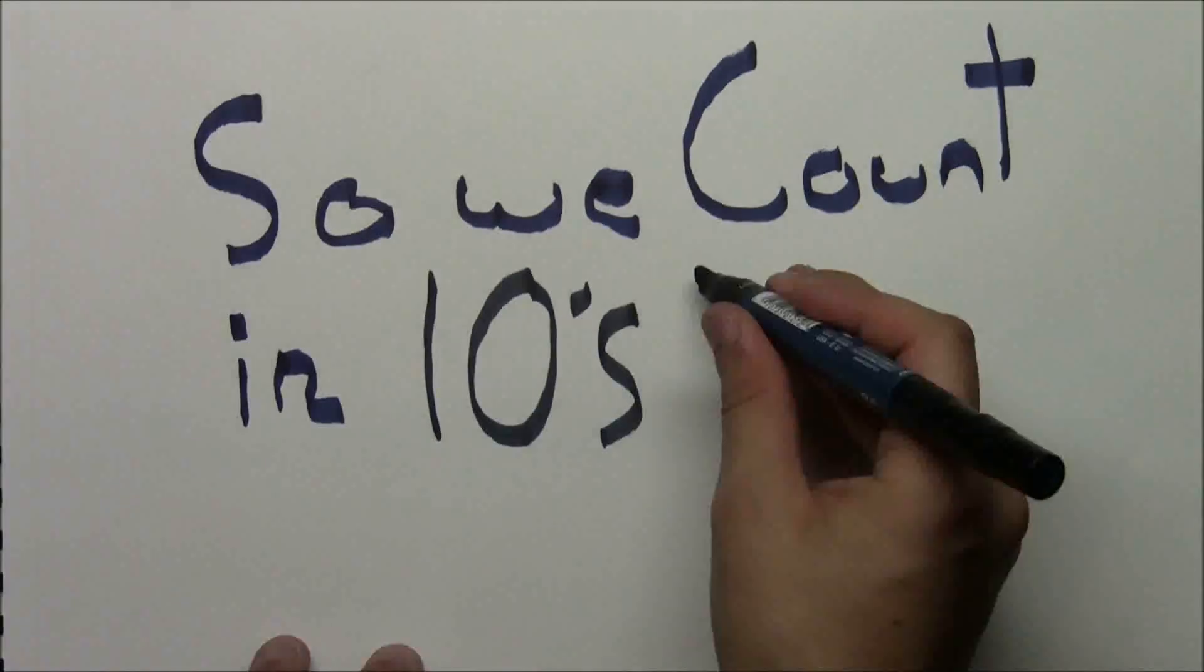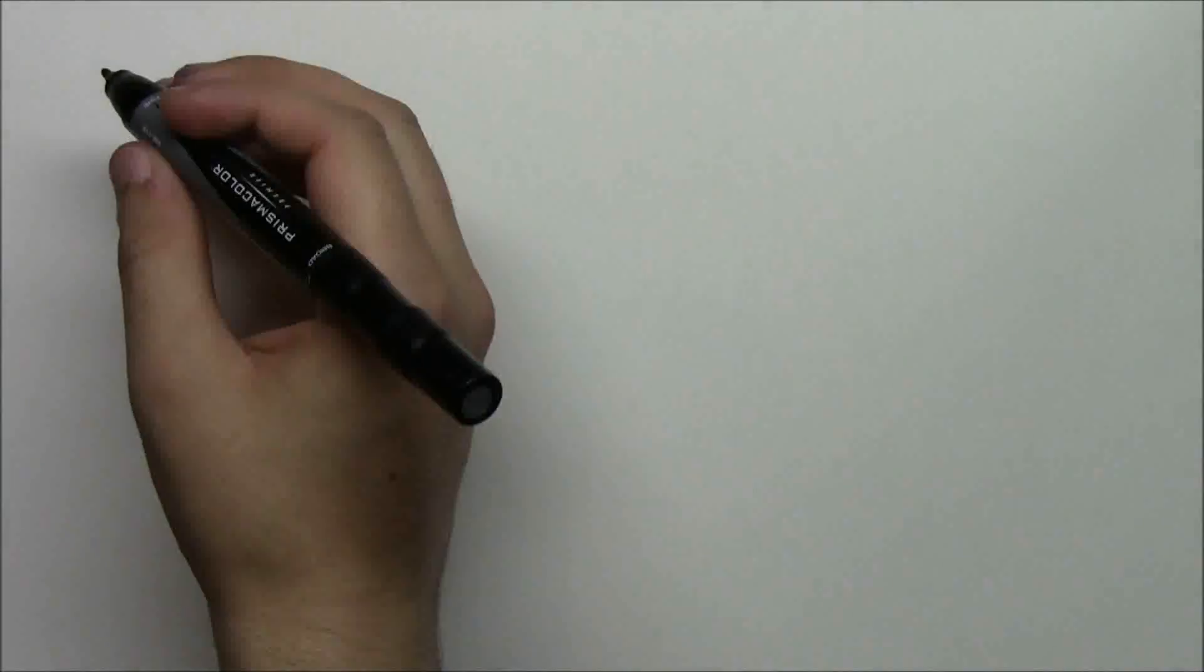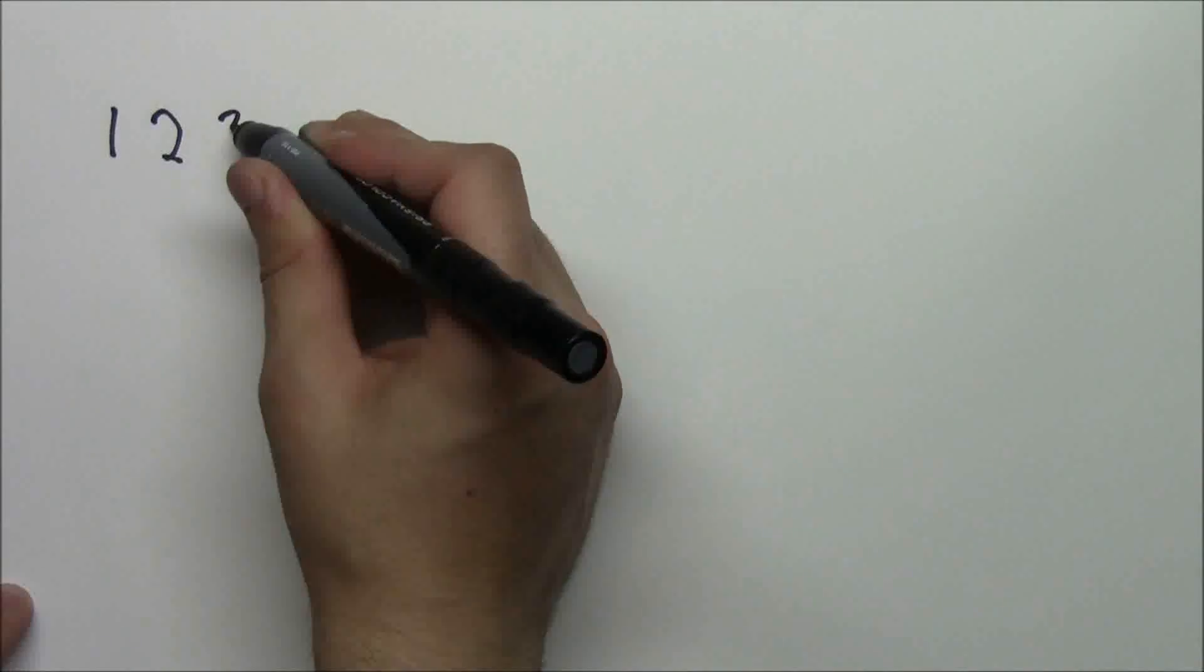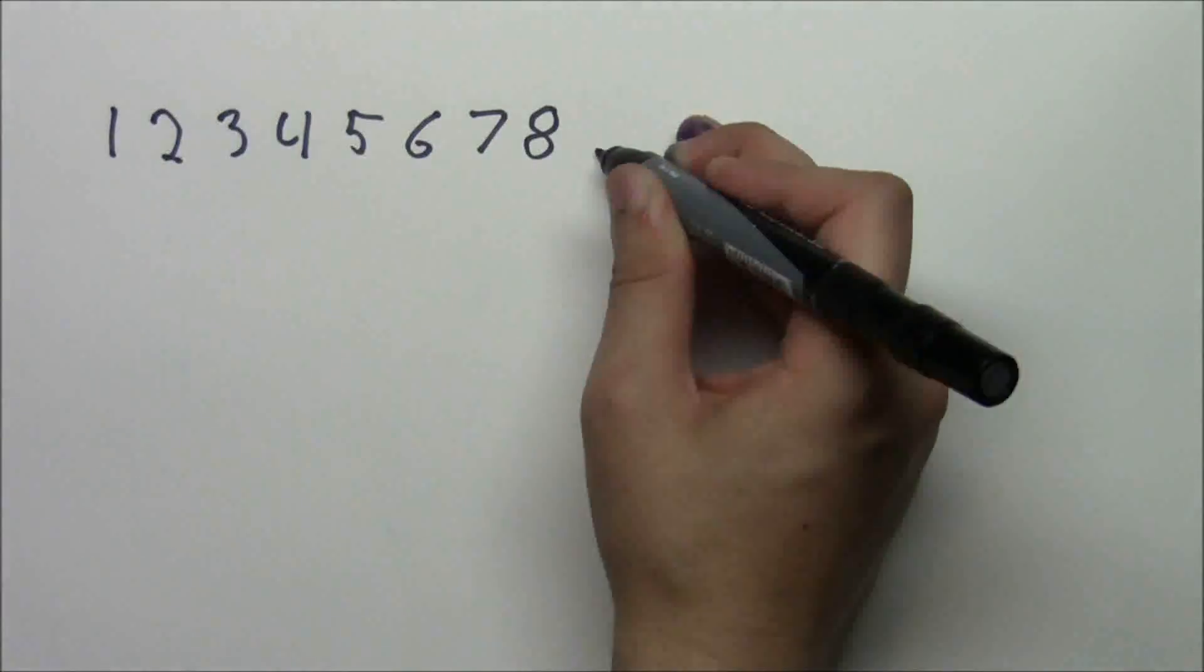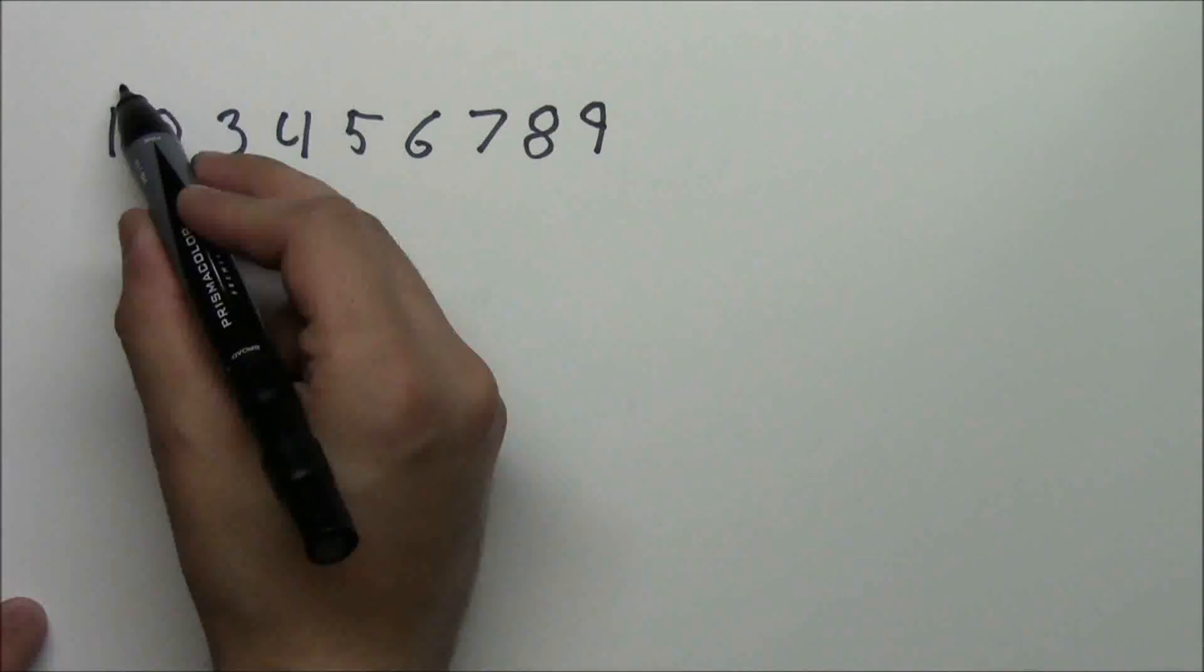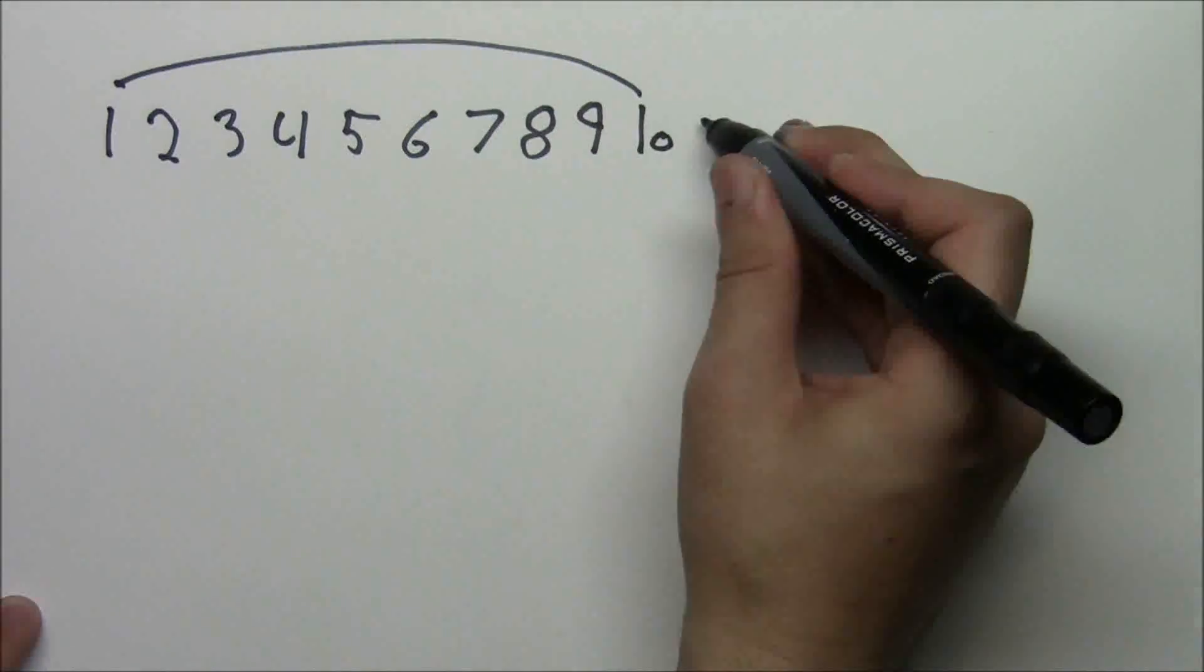So we count in base 10, right? Like we count 1, 2, 3, 4, 5, 6, 7, 8, 9, and then we take 1 and start over with 10, 11, 12, and so on. Now we're pretty used to base 10, also known as the decimal system. I mean, we use it every day.